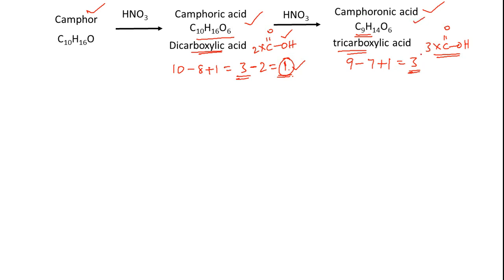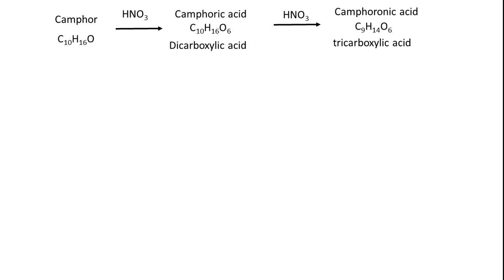Now we have to piece the structural information together by reverse thinking. The structural elucidation was pursued by first determining the structure of camphoronic acid, then building the structure of camphoric acid from that, and finally obtaining the structure of camphor.